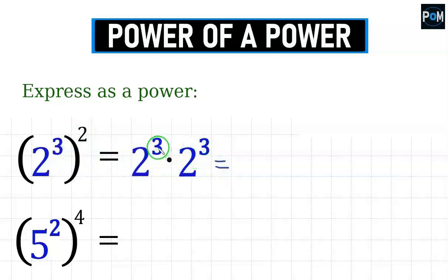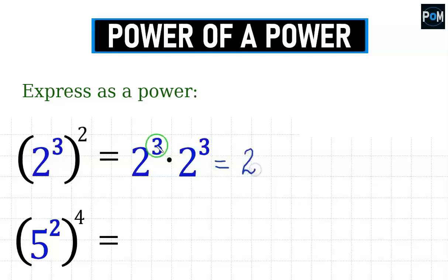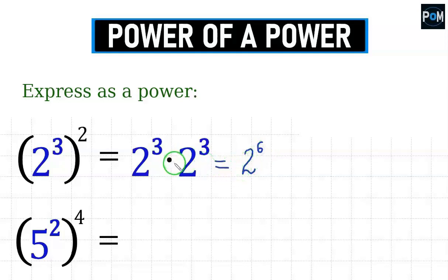From previous topics on powers, we should know that if we have an operation where we have the power of 2 and the power of 2, the base 2 will also be found in the result. These exponents 3 and 3 — we add them together and get 2 to the power of 6. That's the result for our first example.